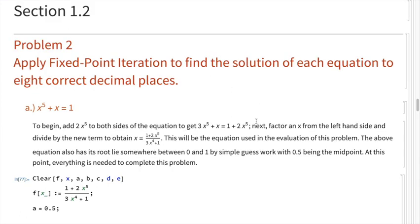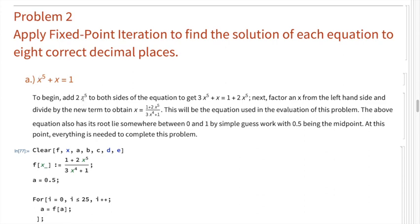Section 1.2, Problem 2: apply fixed point iteration to find the solution of each equation to eight correct decimal places. Problem a: x^5 + x = 1. We add 2x^5 to both sides of the equation, then factor x from the left-hand side and divide to get: x = (1 + 2x^5) / (3x^4 + 1). This is the equation we'll use. We know the root lies between 0 and 1, so the midpoint 0.5 is our starting point.